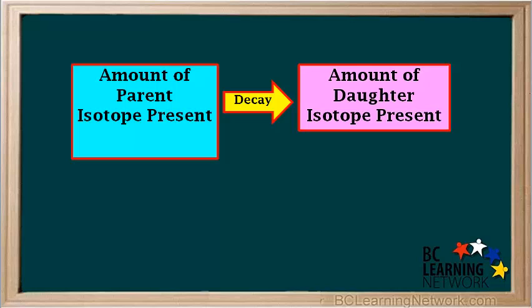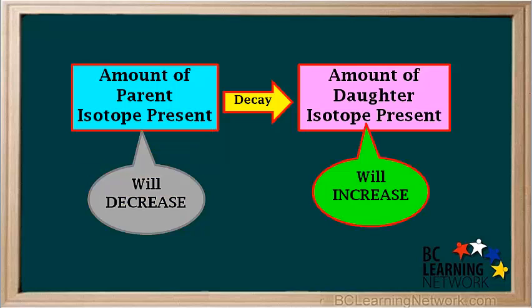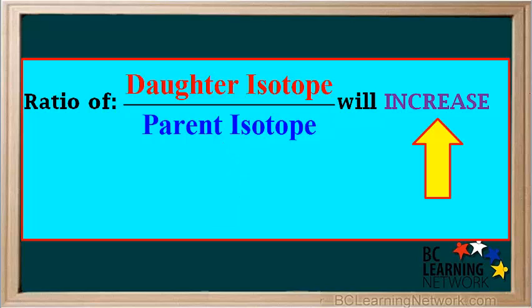As a parent isotope decays into a daughter isotope, the amount of the parent isotope present will decrease, while the amount of the daughter isotope present will increase. So we can see that the ratio of the amount of daughter isotope to parent isotope present will increase over time.